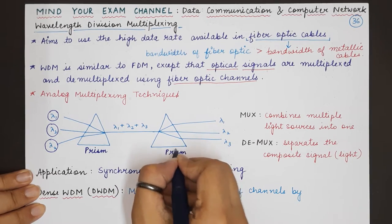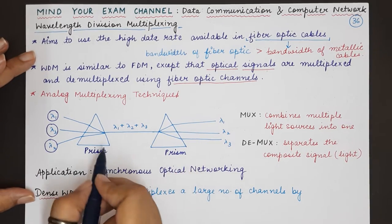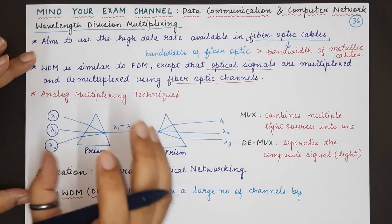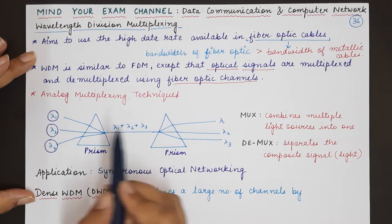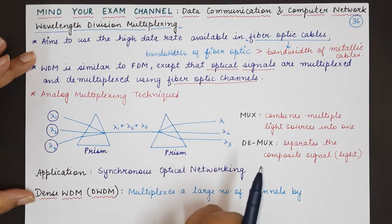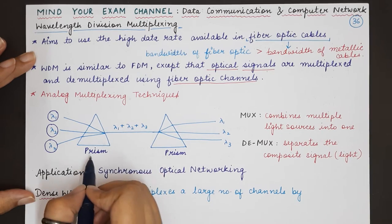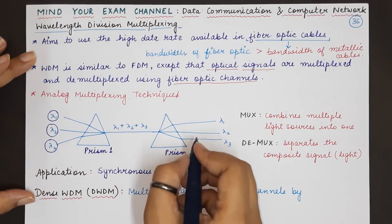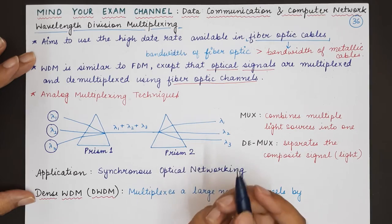Now for wavelength division multiplexing we can use something known as a prism. So you must have studied about prism in your school days. So what does a prism basically do? A prism can divide the light that is entering into it just like in this case or a prism can also receive different kinds of light signals and combine them into a single one. So basically this prism, prism 1 will act as a multiplexer in wavelength division multiplexing and the second prism acts as a demultiplexer.